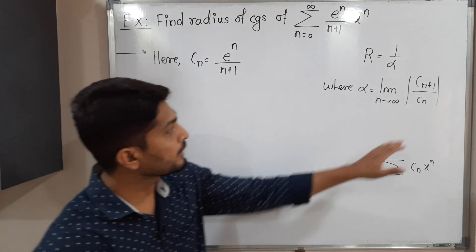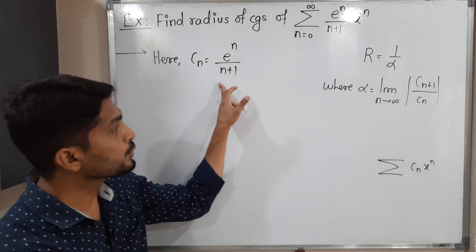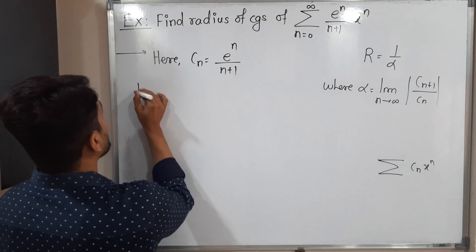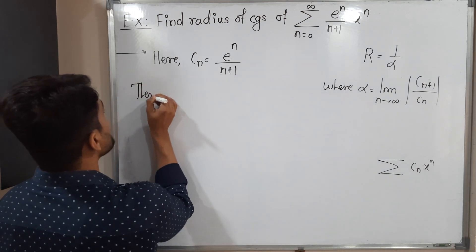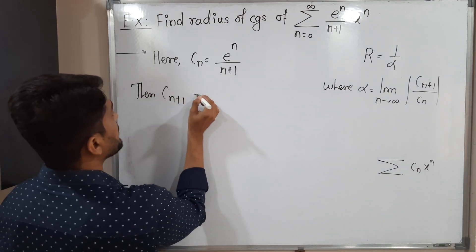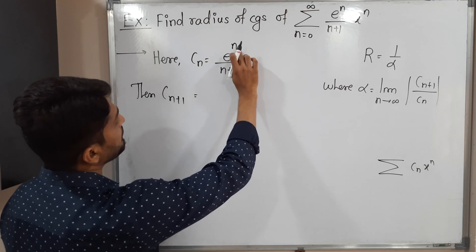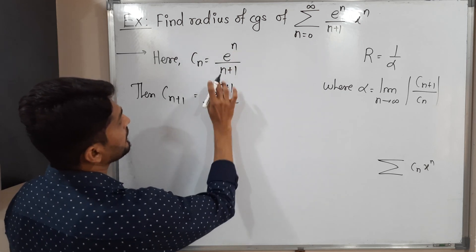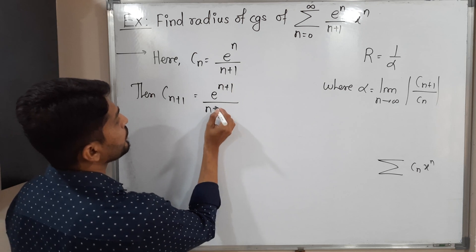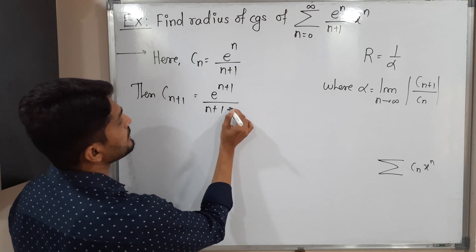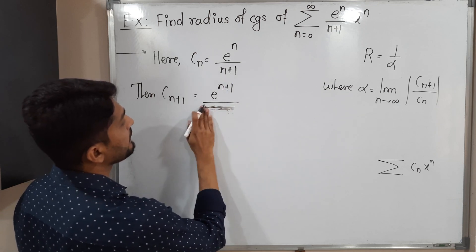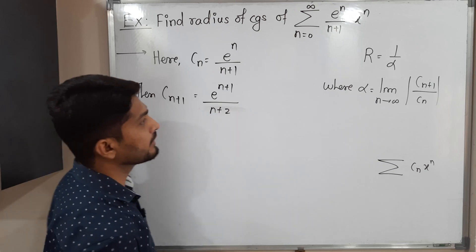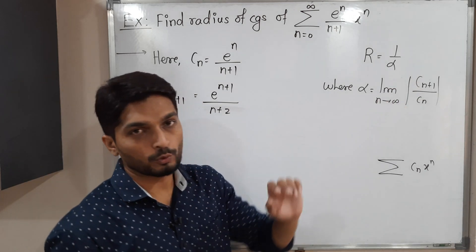We have C_n here. We need to find C_{n+1}. To find C_{n+1}, we simply replace n by n+1. So we get e^(n+1) in the numerator, and in the denominator, n+1 plus 1 gives us n+2. So C_{n+1} = e^(n+1) / (n+2).